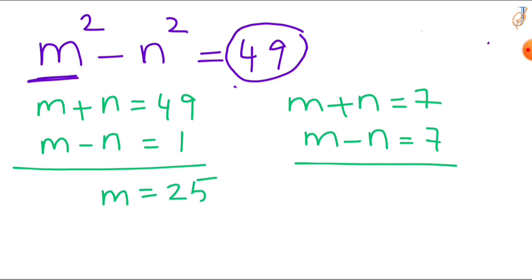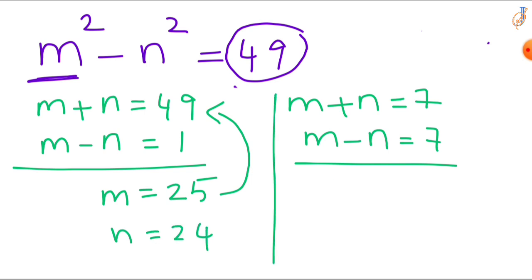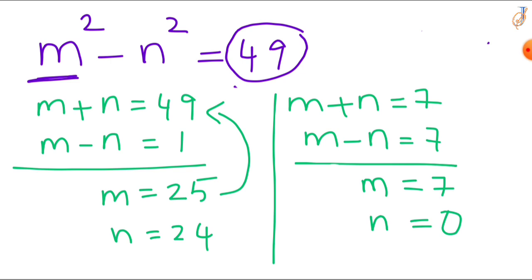Substituting m = 25, we get n = 24. In the second case: m + n = 7 and m - n = 7. After simplifying, 2m = 14, so m = 7 and n = 0. These are the two sets of values for m and n. Now let's check if they satisfy the original equation.